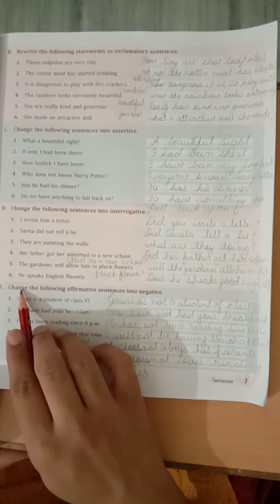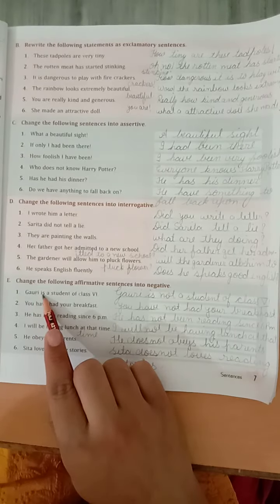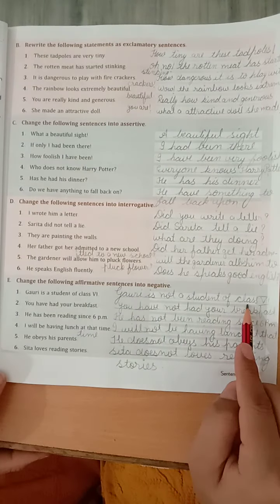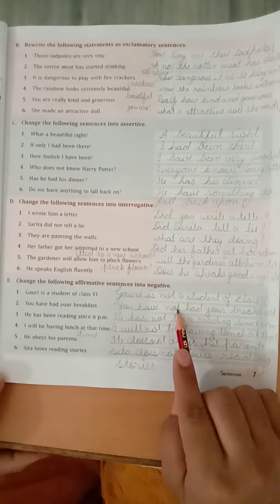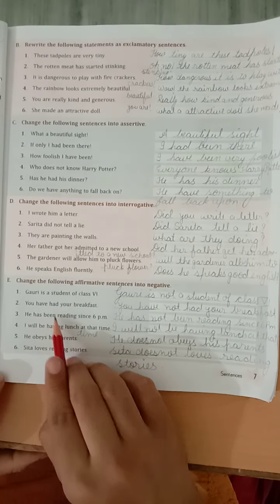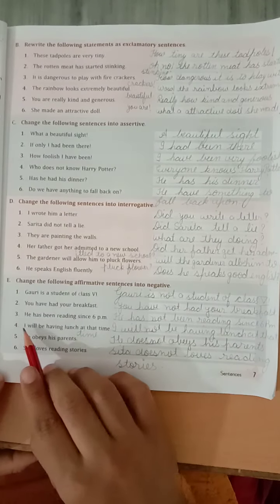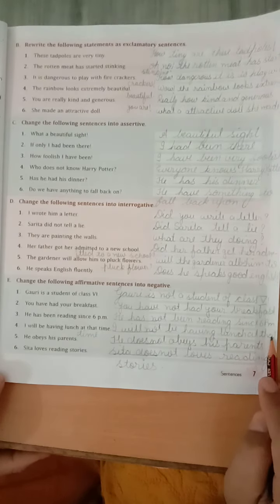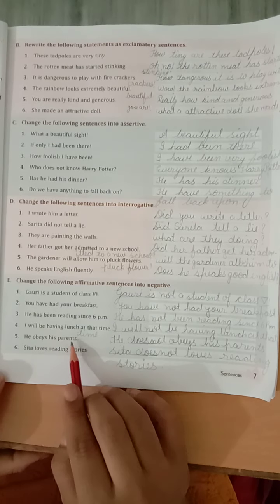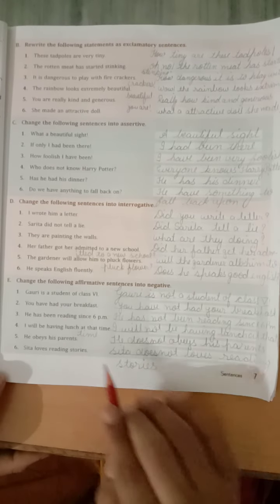Now, last and E part. Change the following affirmative sentences into negative. Gori is a student of class 6. Gori is not a student of class 6. Second, you have had your breakfast. You have not had your breakfast. He has been reading since 6 p.m. He has not been reading since 6 p.m. I will be having lunch at that time. I will not be having lunch at that time. He obeys his parents. He does not obey his parents. Sita loves reading stories. Sita does not love reading stories. Okay.